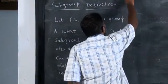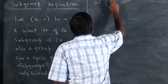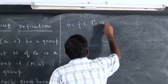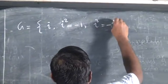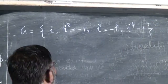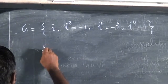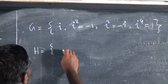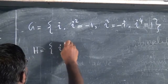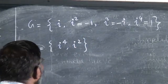This is a good question. The group discussed is {i, i² = -1, i³ = -i, i⁴ = 1}. If you take the subset {i⁴, i²} = {1, -1}, this is a subgroup.